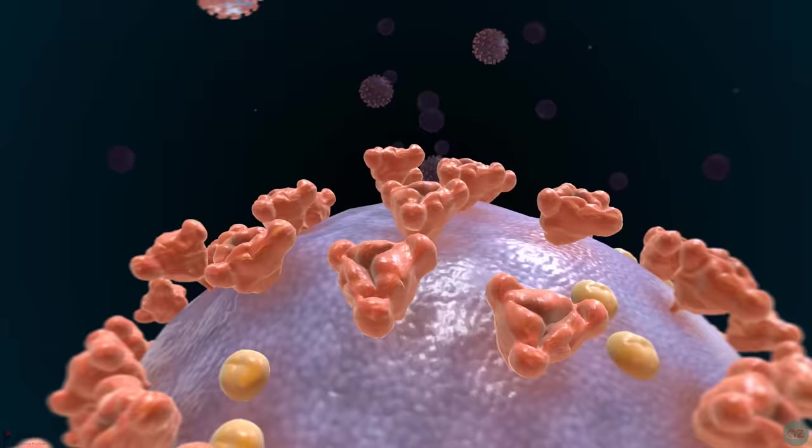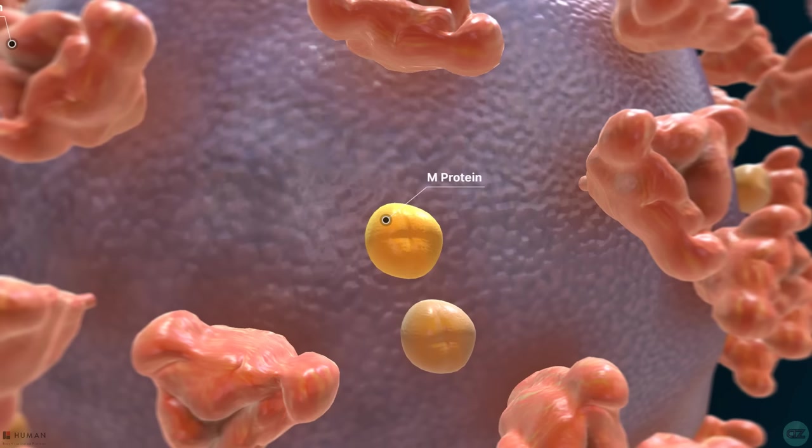Let's take a look at the next protein, the M or membrane protein. The membrane protein is the most abundant on the viral surface and defines the shape of the viral envelope. It can be thought of as the central organiser for coronavirus assembly and interacts with the other structural proteins.